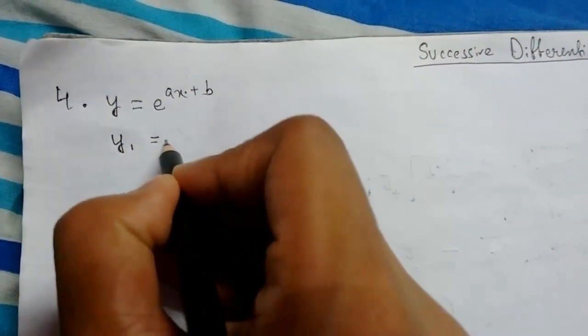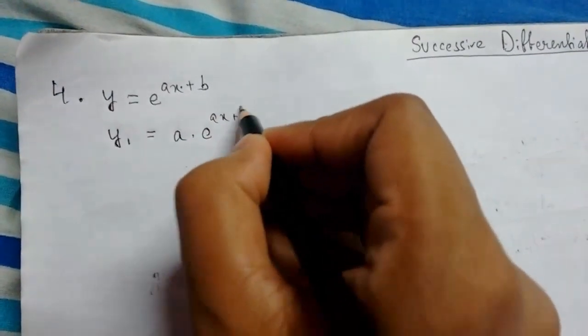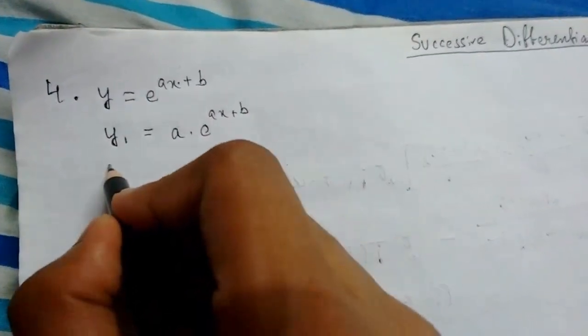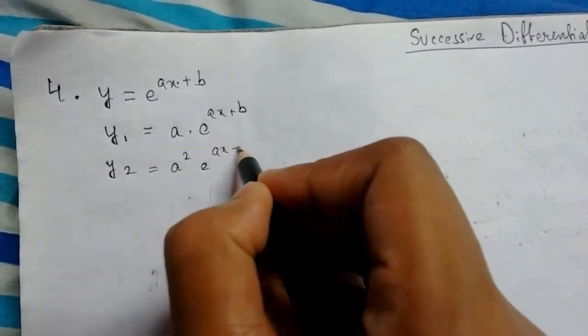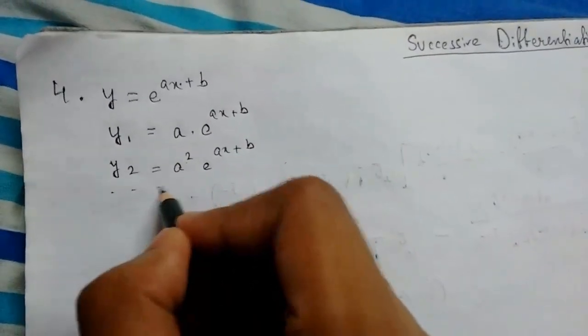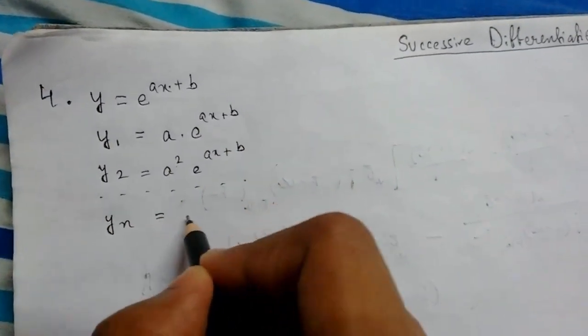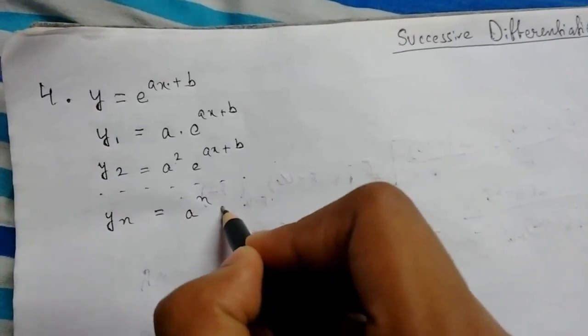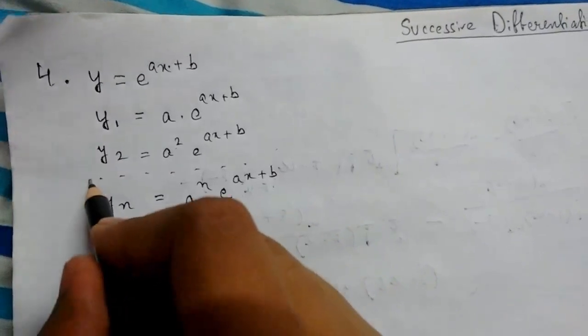y1 equals a times e to the power ax plus b. Now differentiating again, we get a squared e to the power ax plus b. Continuing this for n times, yn we can write simply as a to the power n times e to the power ax plus b. This is pretty simple.